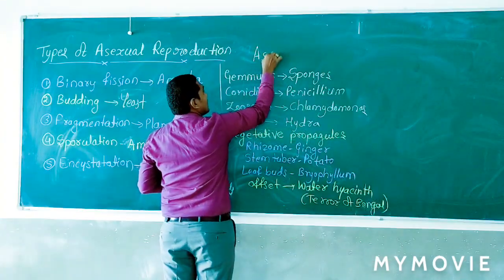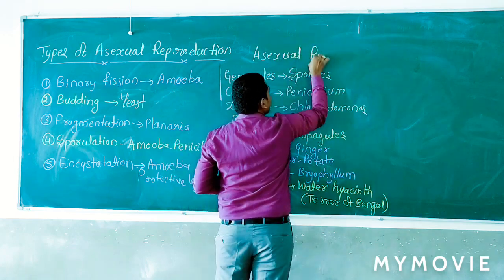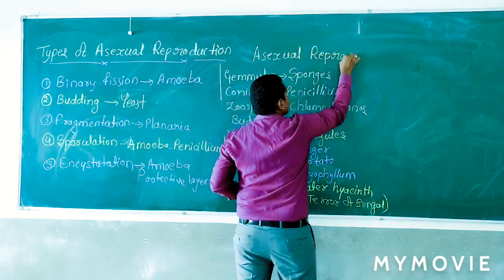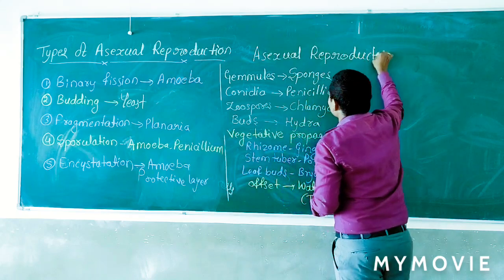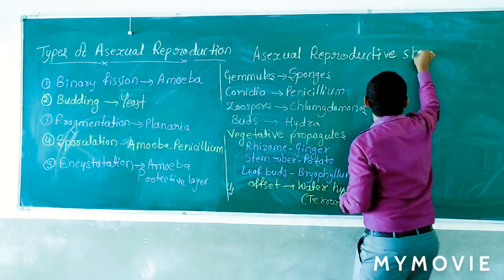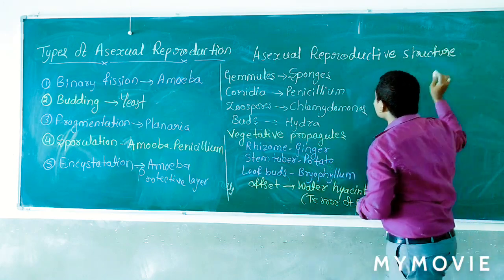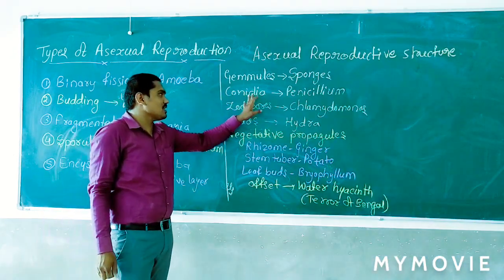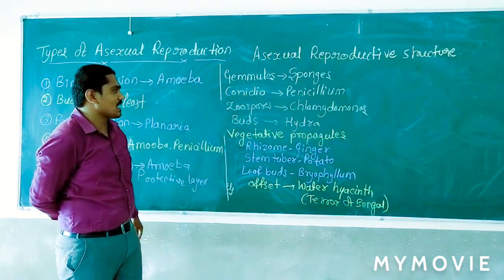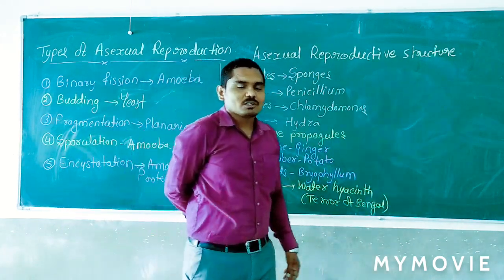Some asexual reproductive structures are present in lower organisms. These include conidia in Penicillium, zoospores in Chlamydomonas, and buds found in Hydra.